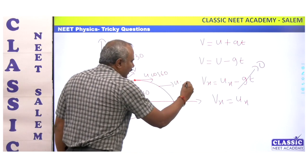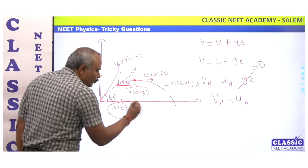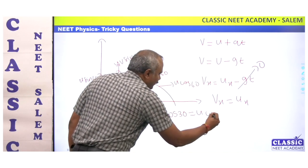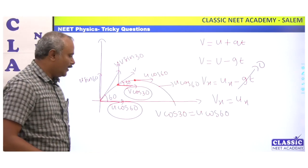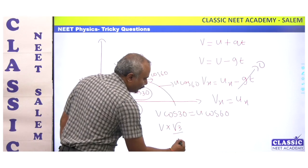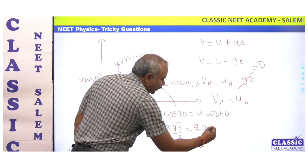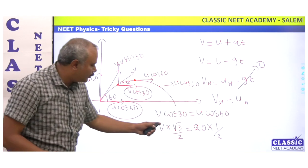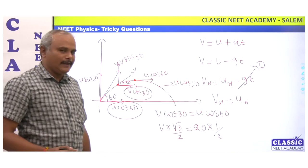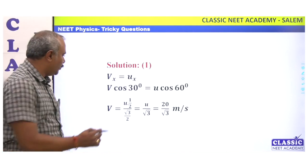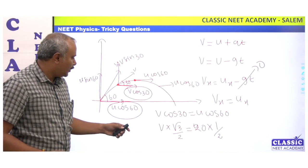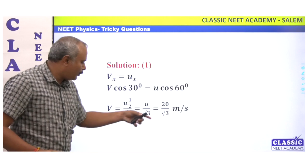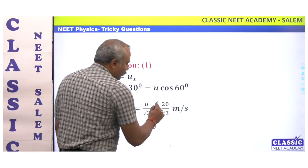Since the velocity makes 30 degrees, V cos 30 is equal to U cos 60. So V times root 3 over 2 equals U times 1 over 2. Substituting U equals 20, we get V times root 3 over 2 equals 20 times 1 over 2 equals 10. Therefore V equals 20 over root 3, which simplifies to 20 root 3 over 3.